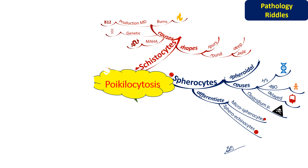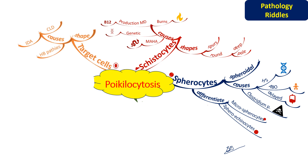The next poikilocyte is target cells. Like a dartboard target, target cells have a central stained area with a peripheral rim of hemoglobinized cytoplasm, with a lightly stained cytoplasmic area in between. The causes include chronic liver disease, iron deficiency anemia, thalassemia, and various other hemoglobinopathies.